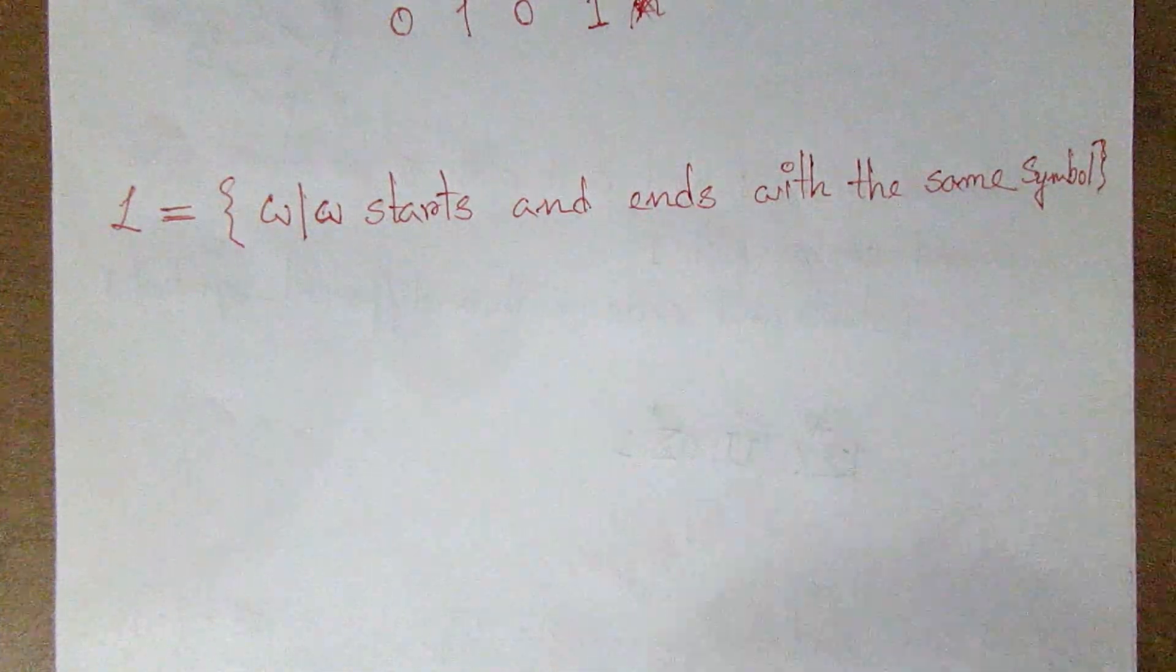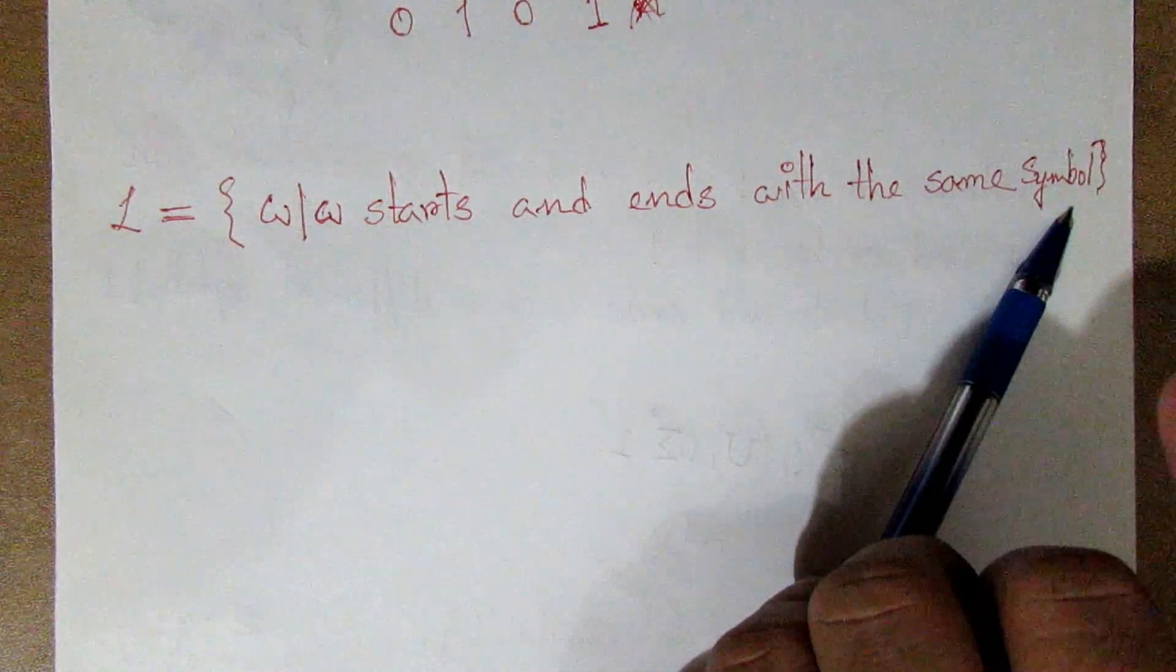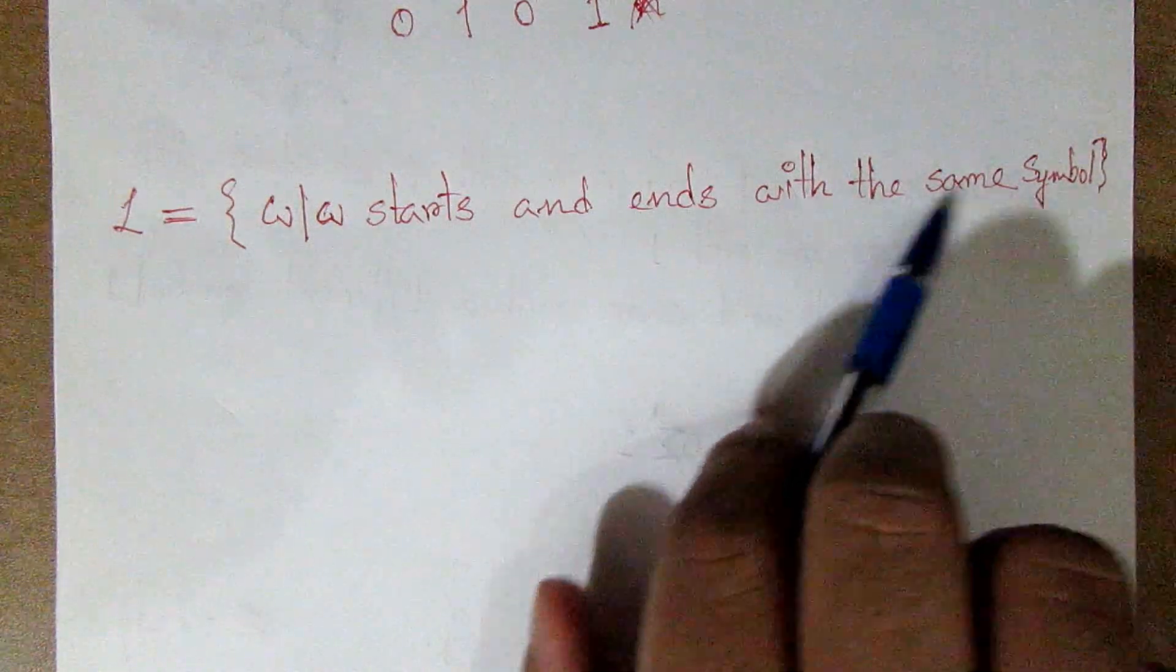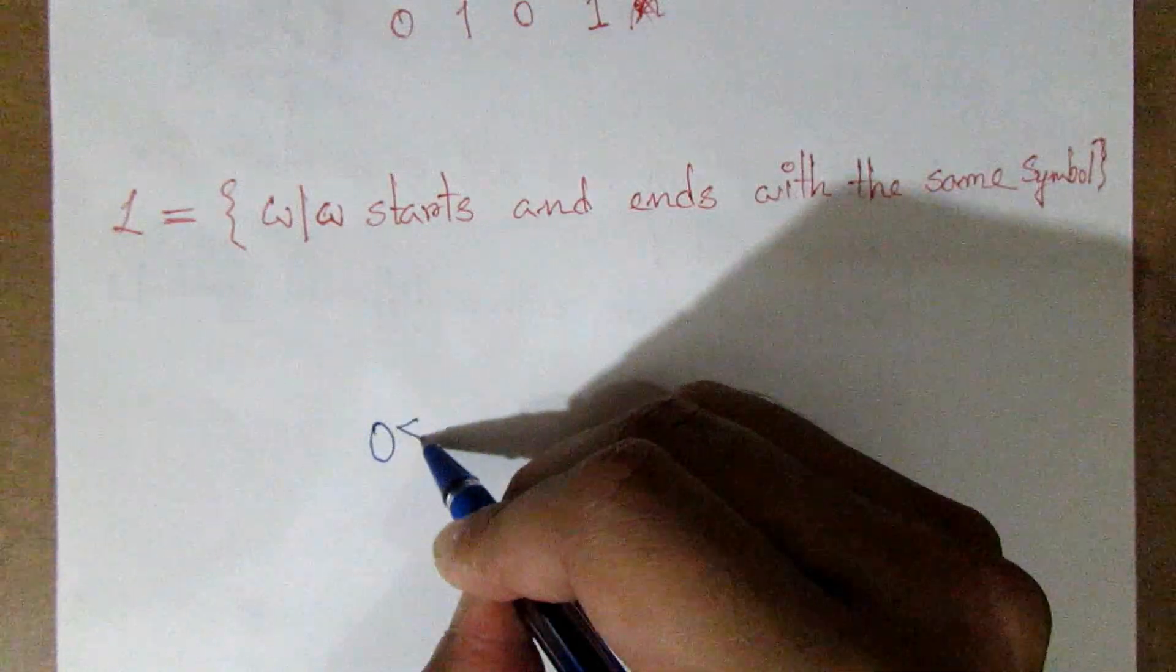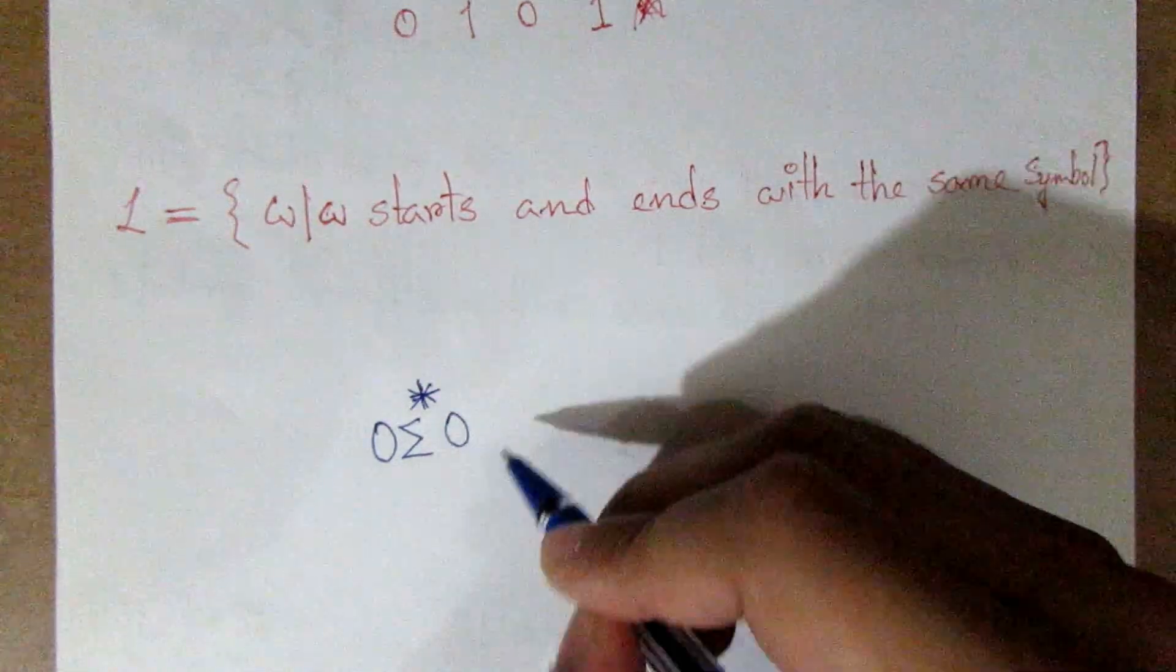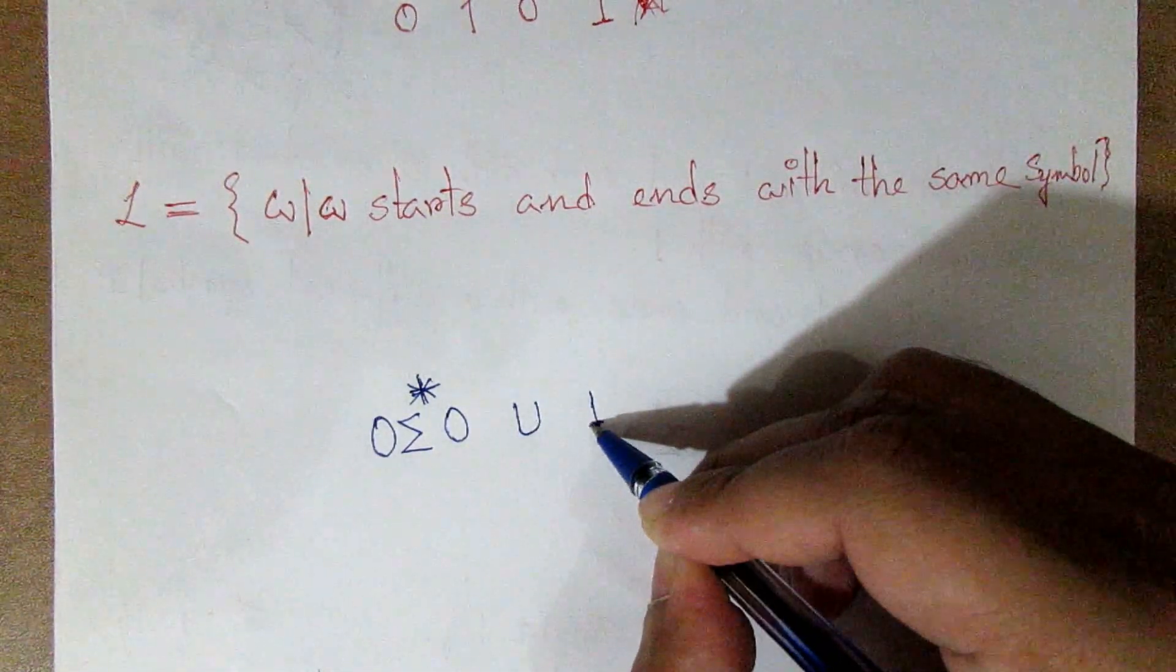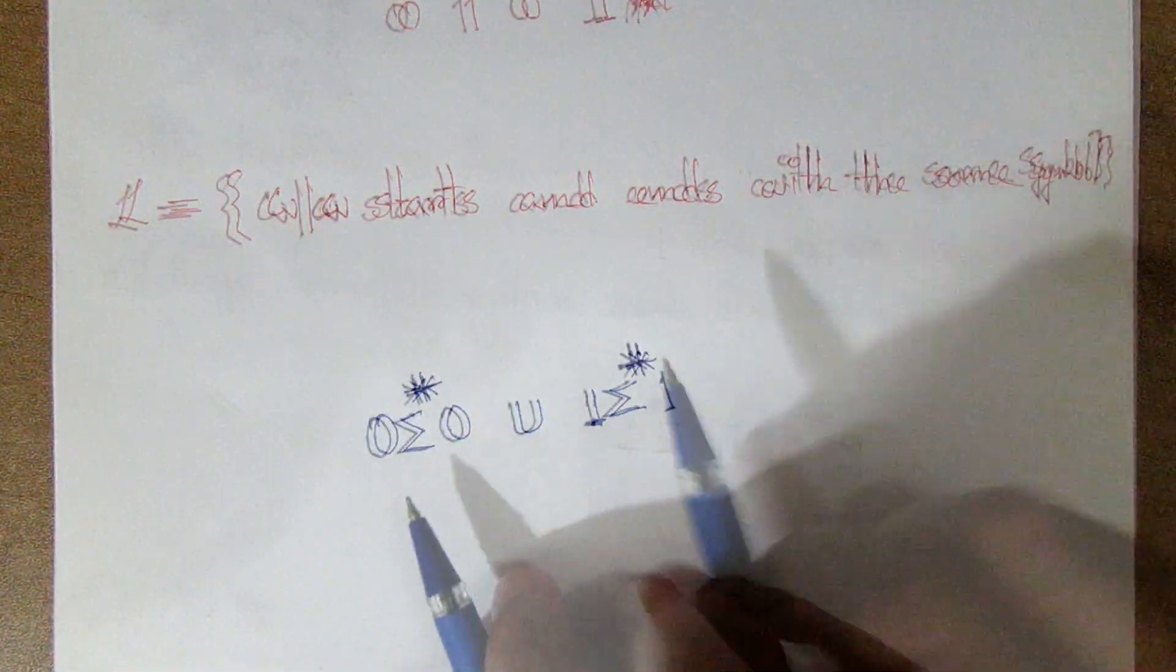So next example is start and ends with the same symbol. This is the same symbol when we start and end with the same symbol. This match is an example of zero one zero or zero two zero. This one type is zero two zero, this one type is zero three zero. This is a type of mistake.